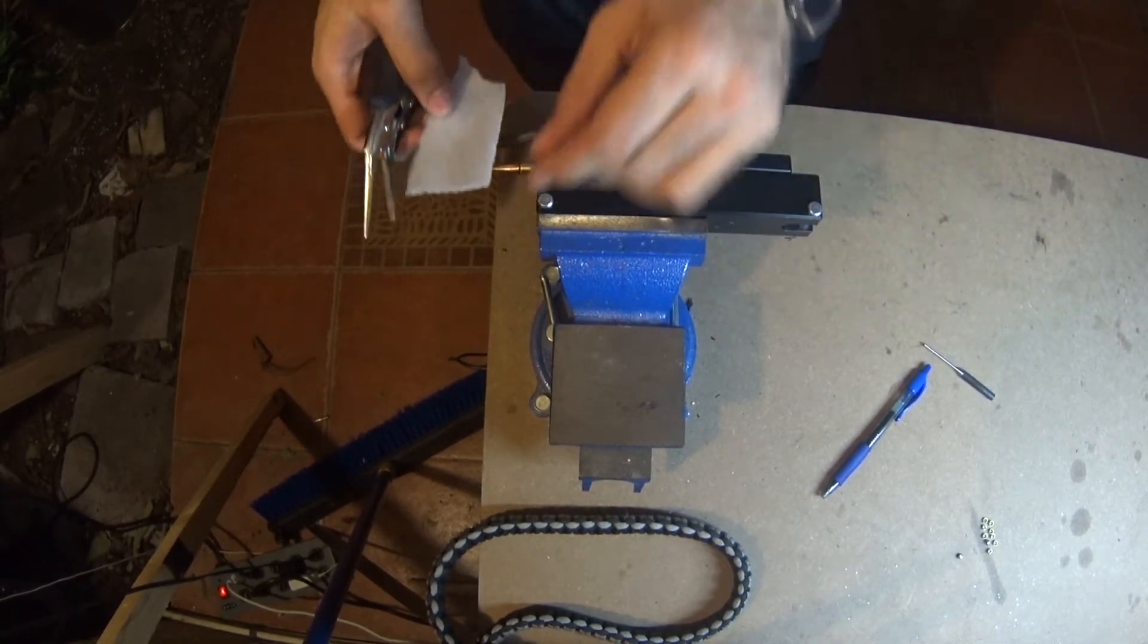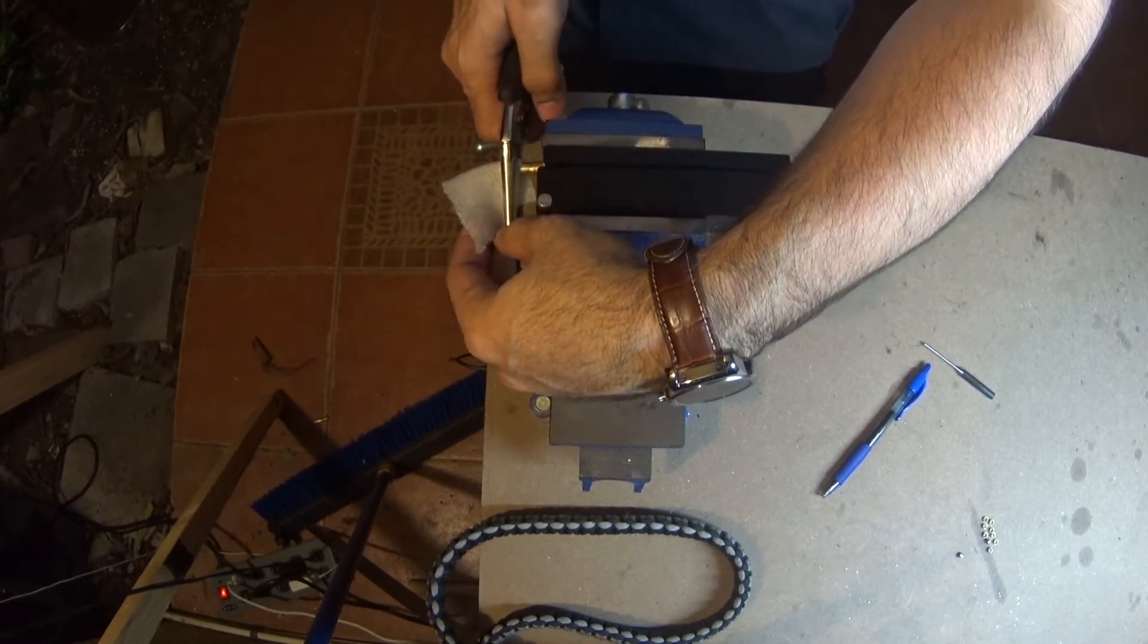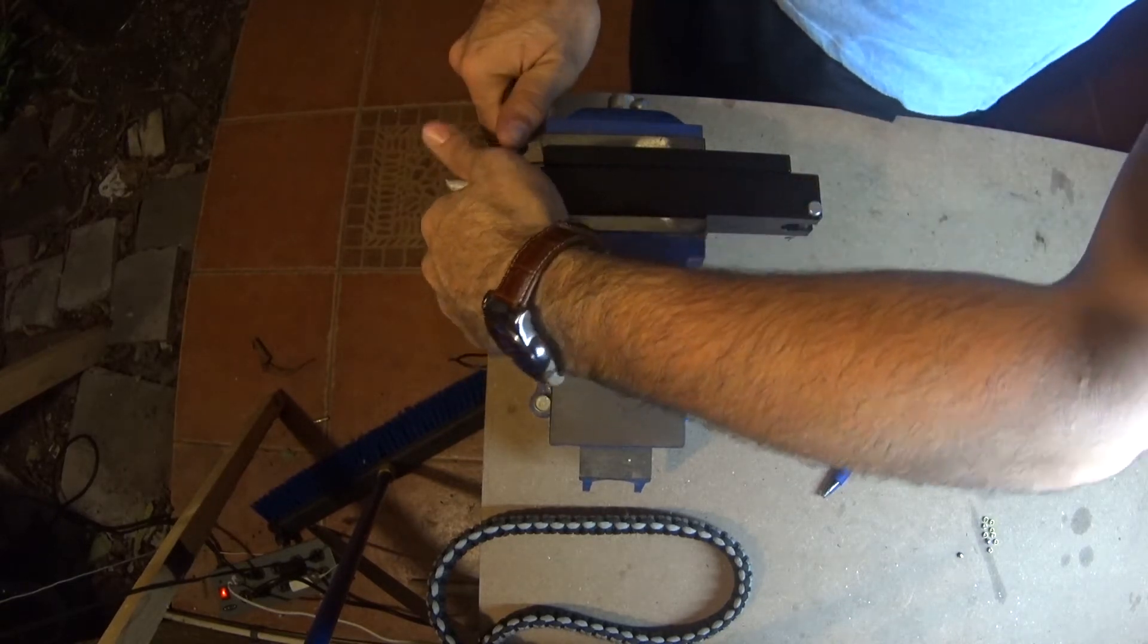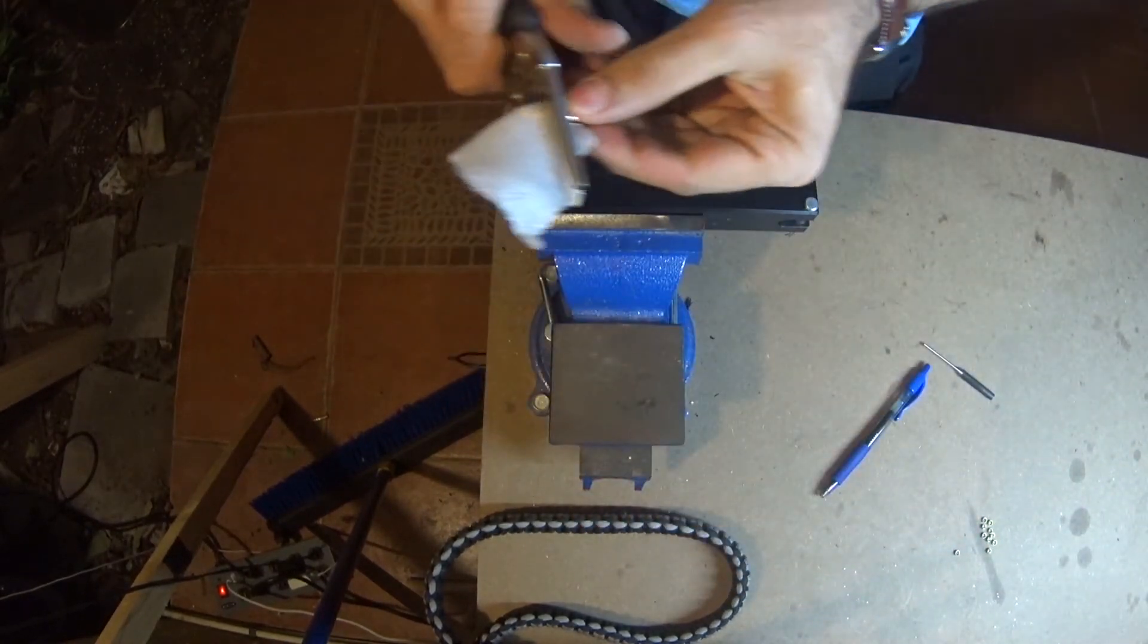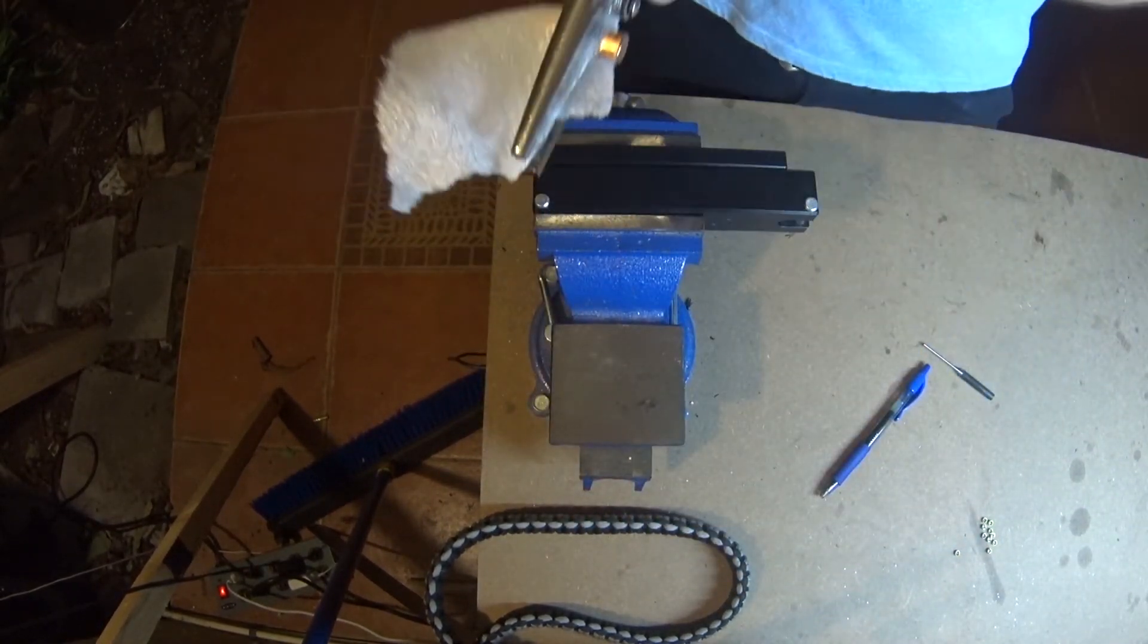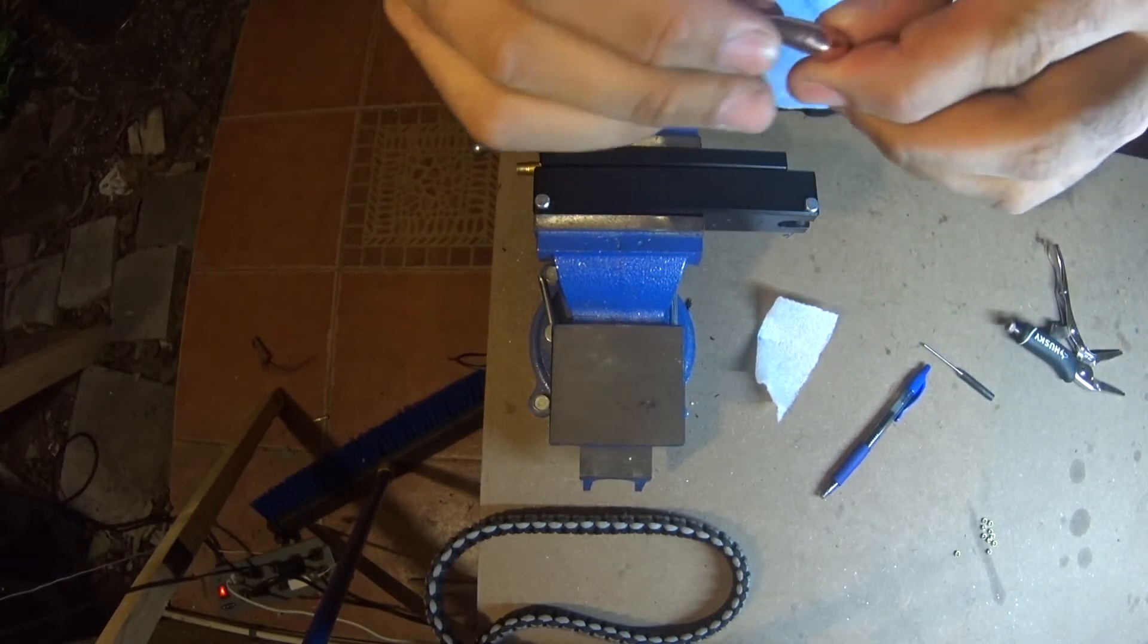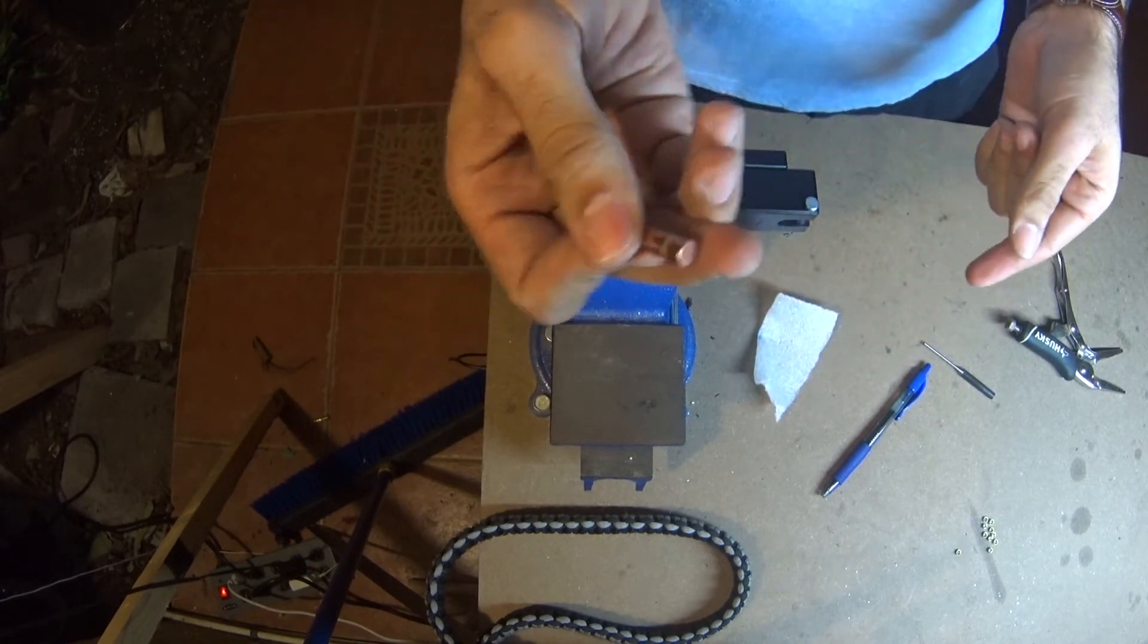Saran wrap, styrofoam, whatever you want to call it, clamp down, pull out the bullet in one forward motion. There you go. Minimal marring on the actual bullet. Actually looks very nice.